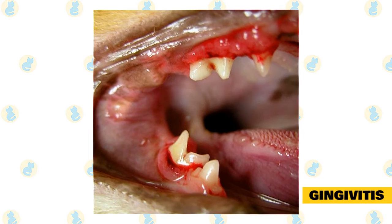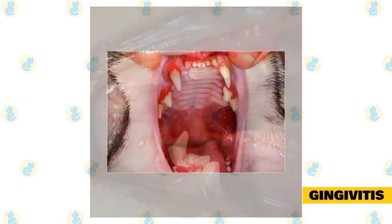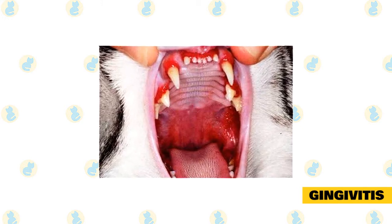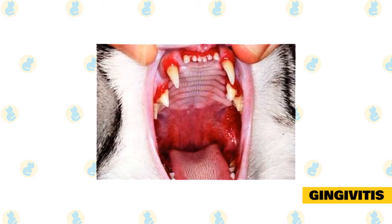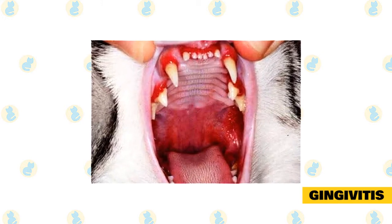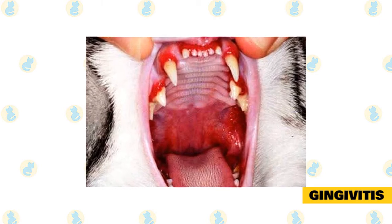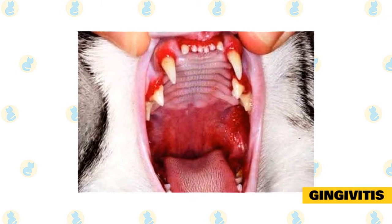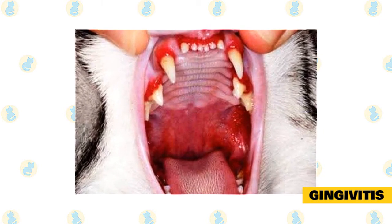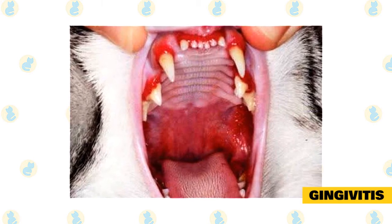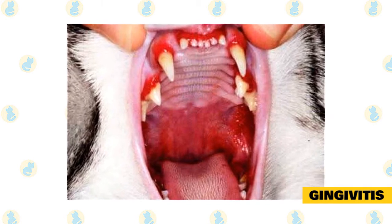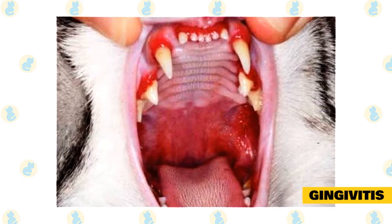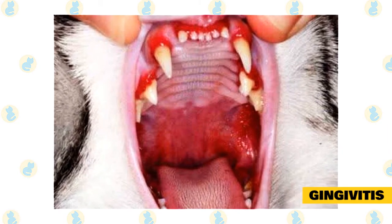It is also possible that a cat's immune system will tolerate the bacteria without any detrimental effects. Gingivitis may also be brought on by a number of infectious or systemic diseases, including feline leukemia virus, feline immunodeficiency virus, feline calicivirus, severe kidney disease, diabetes mellitus, and autoimmune disease.